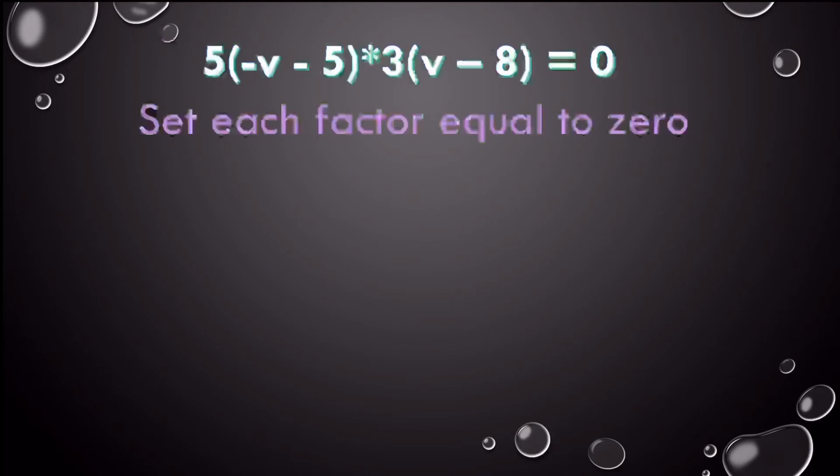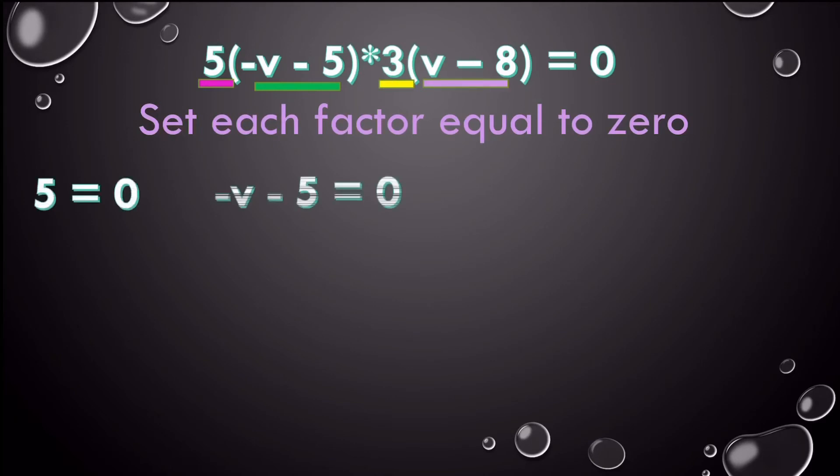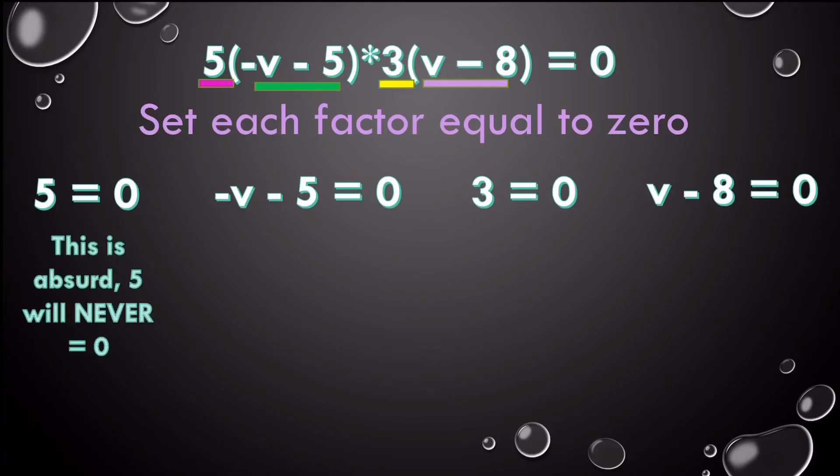Oh, wow. What about this one? It doesn't matter how many factors there are. I set each factor - 1, 2, 3, 4 - I'm going to set each one equal to zero. Now when I look at 5 equals zero, hmm, that's absurd. Will 5 ever equal zero? No. So we just kind of throw it out because that's not even possible.